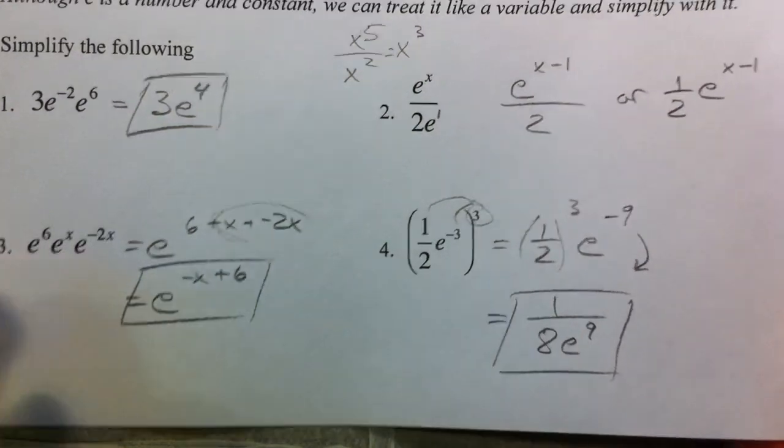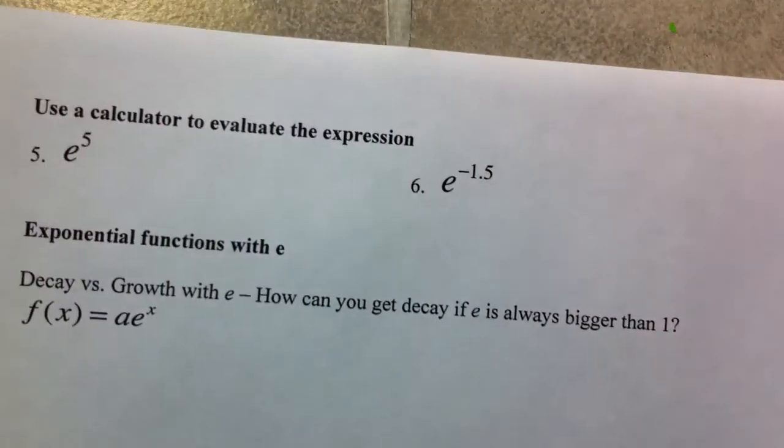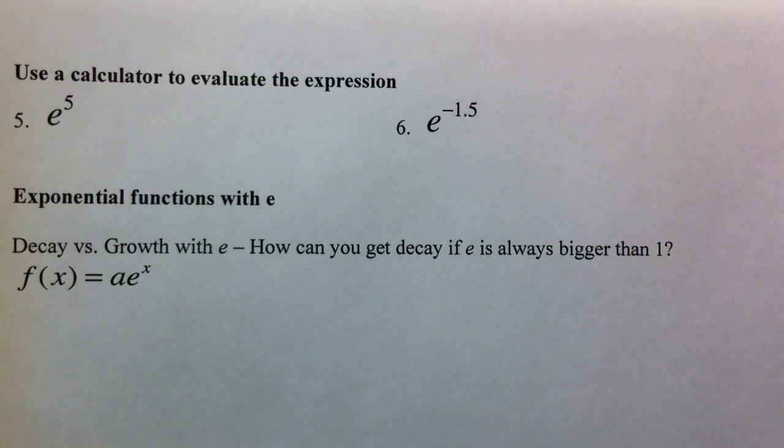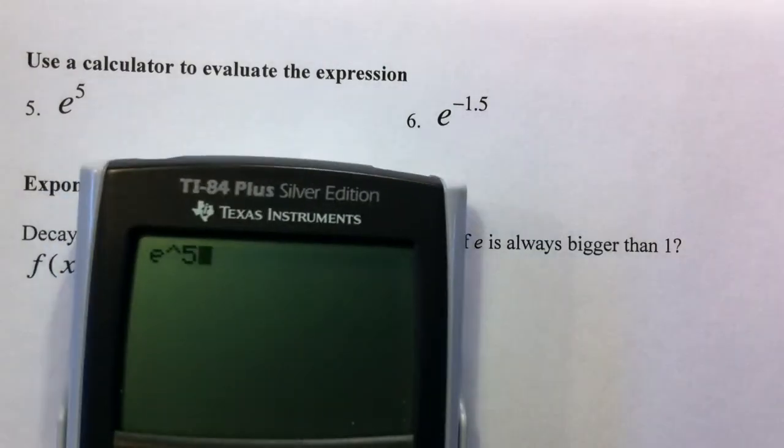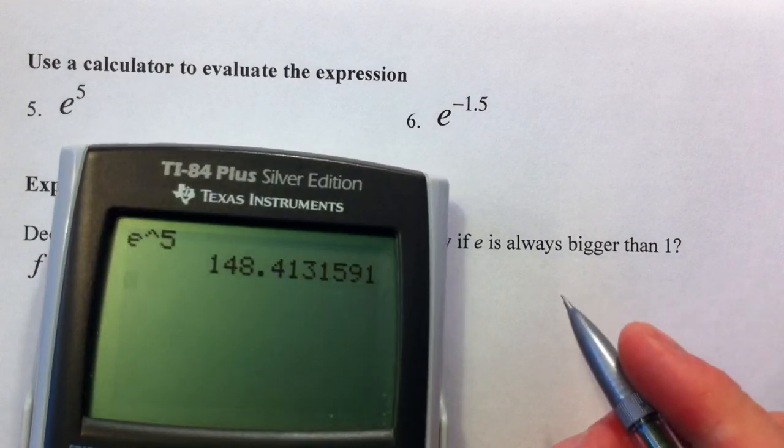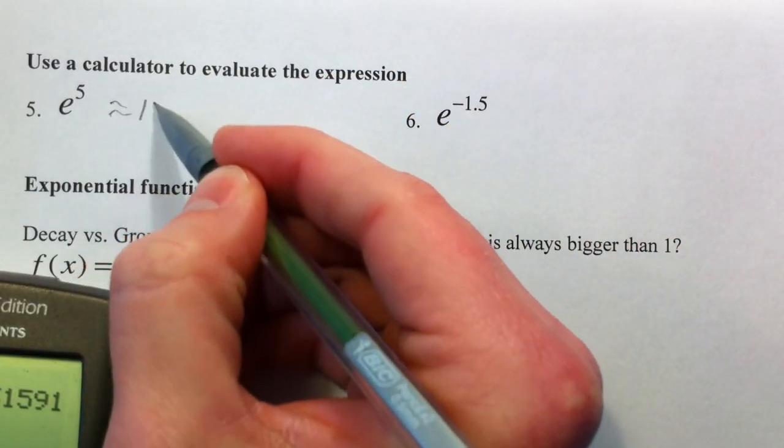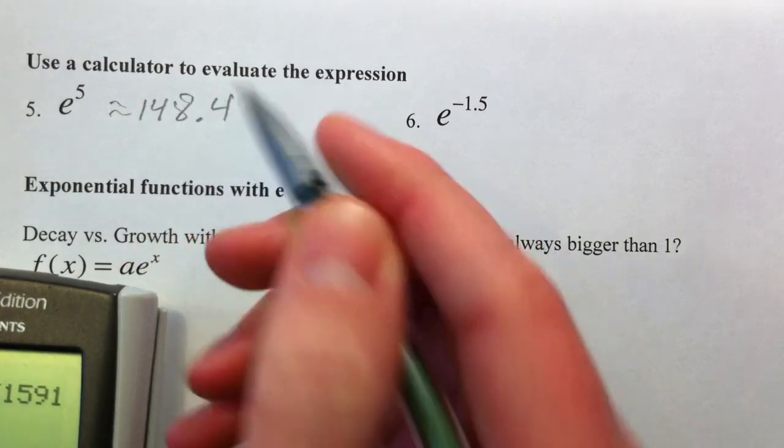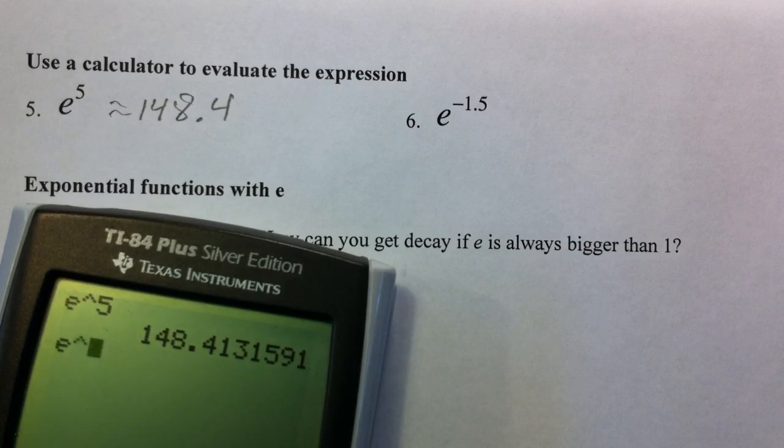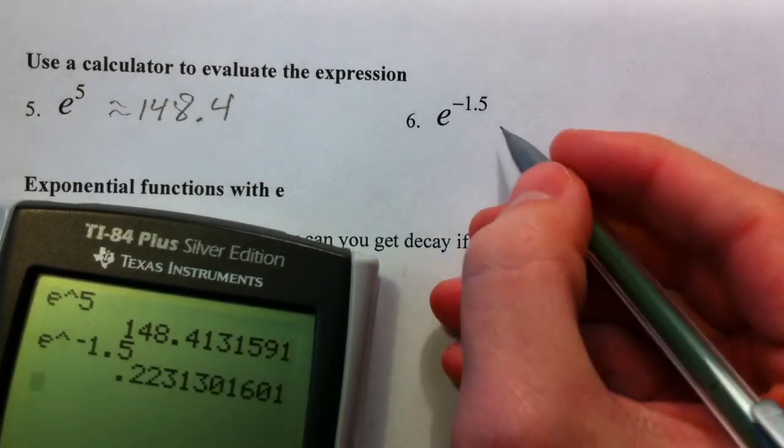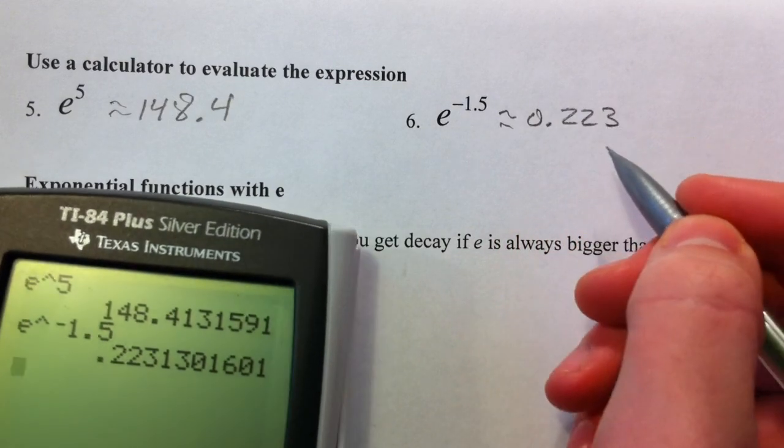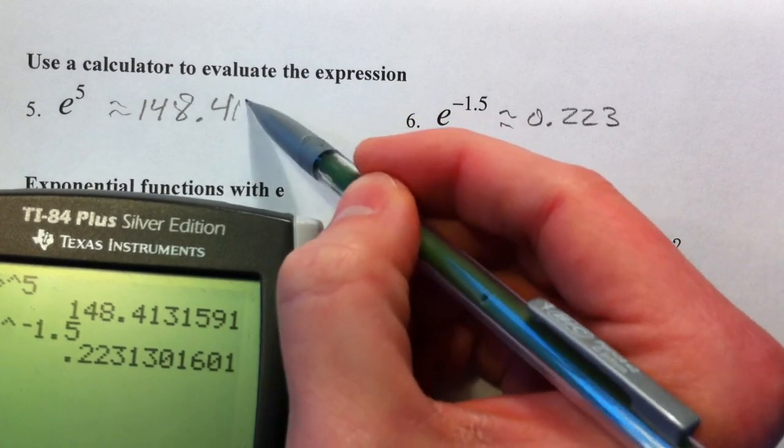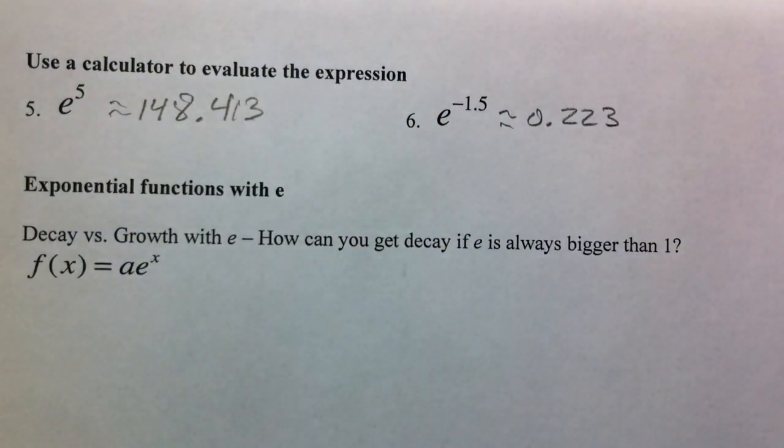All right. So let's keep moving. We've already pointed out our calculator has an E button. And so our E to the fifth power is 148.413. And our E to the negative 1.5 is 0.223. And we'll catch up in the next video.